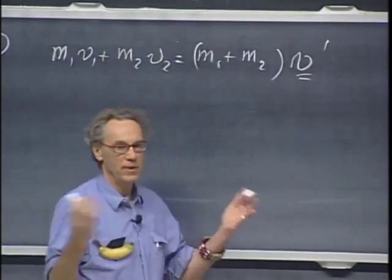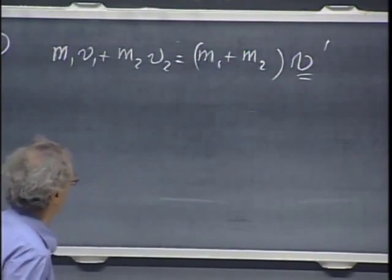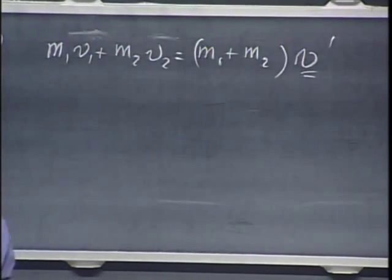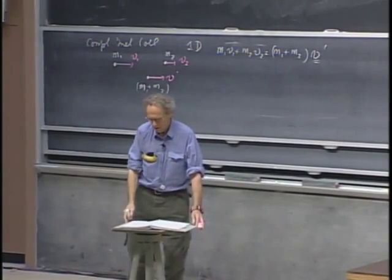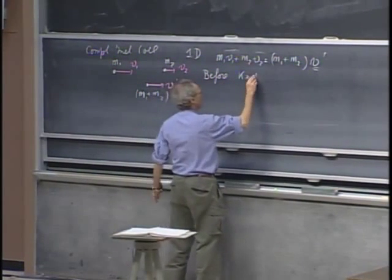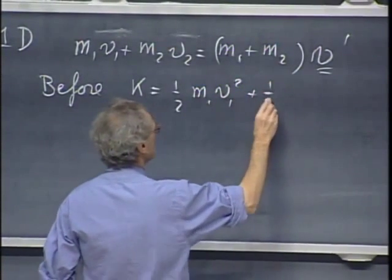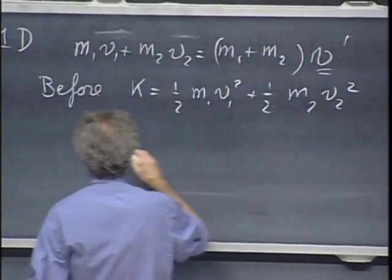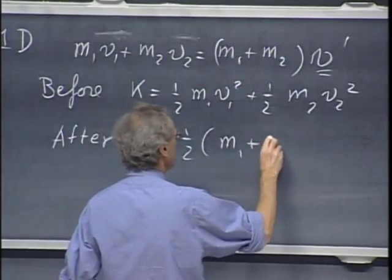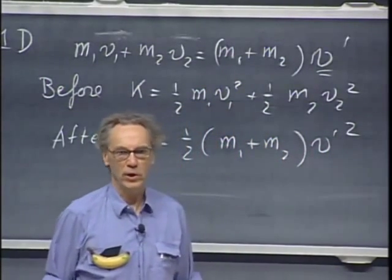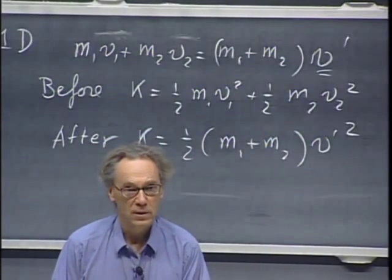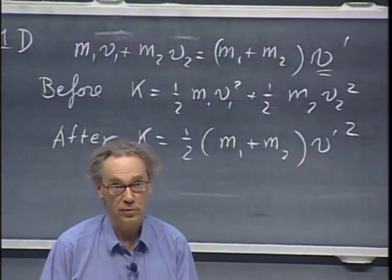One equation with one unknown — v prime follows immediately. In the case of a one-dimensional collision, you can leave the arrows off because the signs automatically take care of that. Kinetic energy is not conserved. Before the collision, kinetic energy equals one-half m1 v1 squared plus one-half m2 v2 squared. After the collision, kinetic energy equals one-half m1 plus m2 times v prime squared. You can easily prove this is always less — there's always kinetic energy destroyed, which comes out in the form of heat.